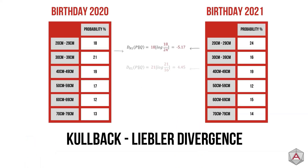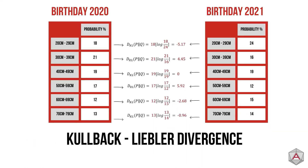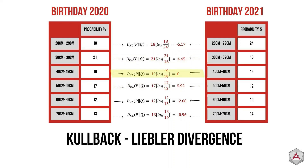Now we can calculate this for every single boundary. We can already begin to make some observations of the datasets. Notice how, if the value of the second dataset is larger than the first, we get a negative value, and if it's smaller, we get a positive value. We can also see that for the boundary 40 to 49cm, our probabilities are both 19, and this results in a boundary KL divergence of exactly 0.